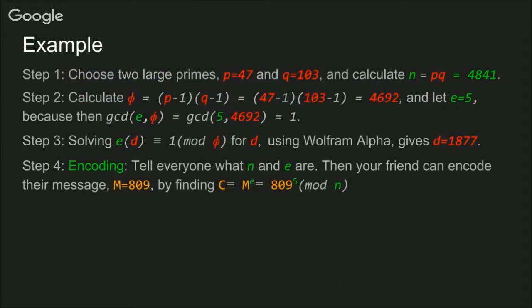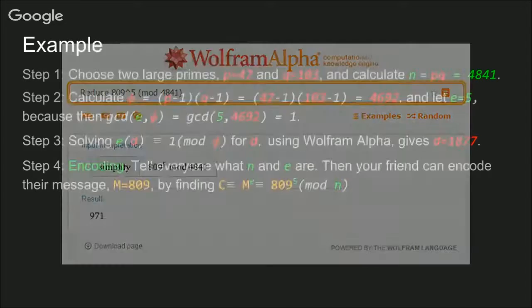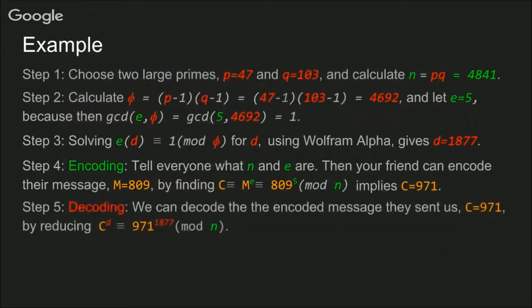Now our friend can encode their message. We're going to tell everyone what N and E are. So our friend can encode their message by finding M to the E and then reducing it mod N. And if they plug in those values, they find that their encrypted message is 971. So that's what they're going to send to us. They're going to send to us the number 971.